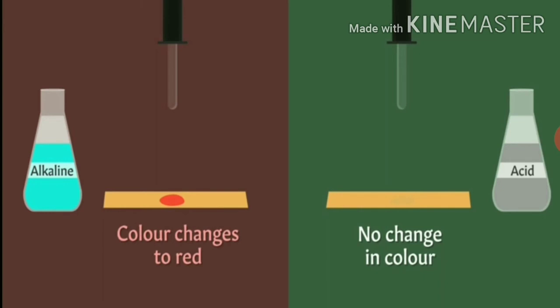You have seen that when turmeric stains on our skin and has dried, when we wash it with detergent, the stain turns red. This is because detergent is basic in nature — that's why the yellow color of turmeric changes to red in contact with the basic detergent.